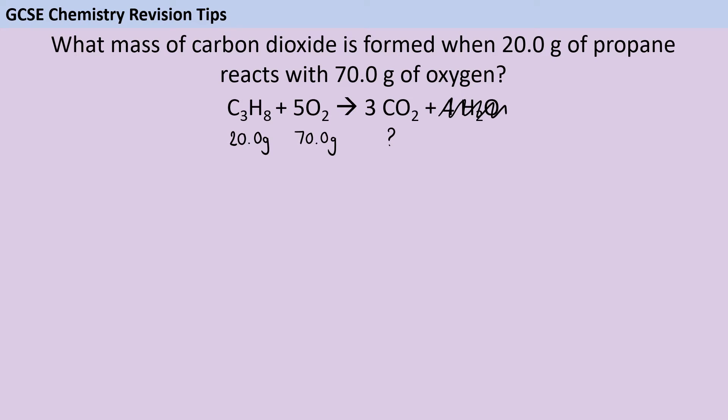The next step, if they haven't given it to you, is to work out the relative formula mass of each chemical. I do this by looking at my periodic table and adding up the masses of all the individual atoms. So for propane there are three carbons and carbon has a mass of 12, eight hydrogens and hydrogen has a mass of one, and that makes a relative formula mass of 44 grams per mole. Then oxygen is obviously easier because it's just this diatomic molecule, and carbon dioxide by coincidence also has a mass of 44.